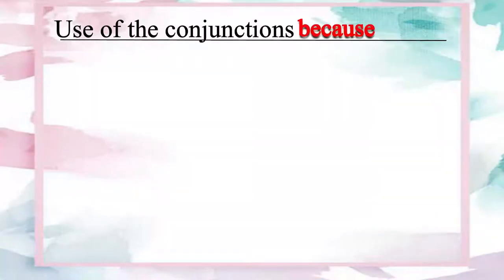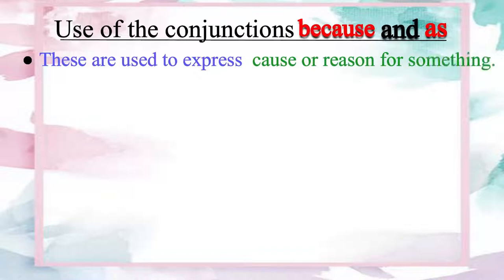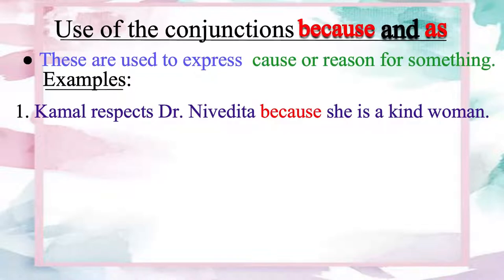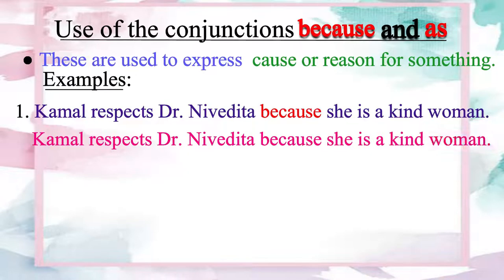The conjunctions because and as are used to express cause or reason for something. Let us look at these examples. Please repeat this sentence: Kamal respects Dr. Nivedita because she is a kind woman. In this sentence, if we ask the question, why does Kamal respect Dr. Nivedita? The answer would be: because she is a kind woman.